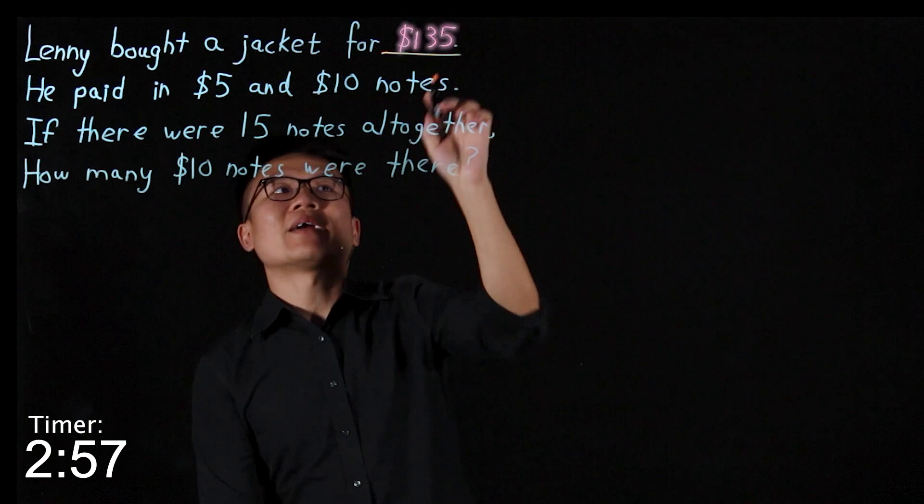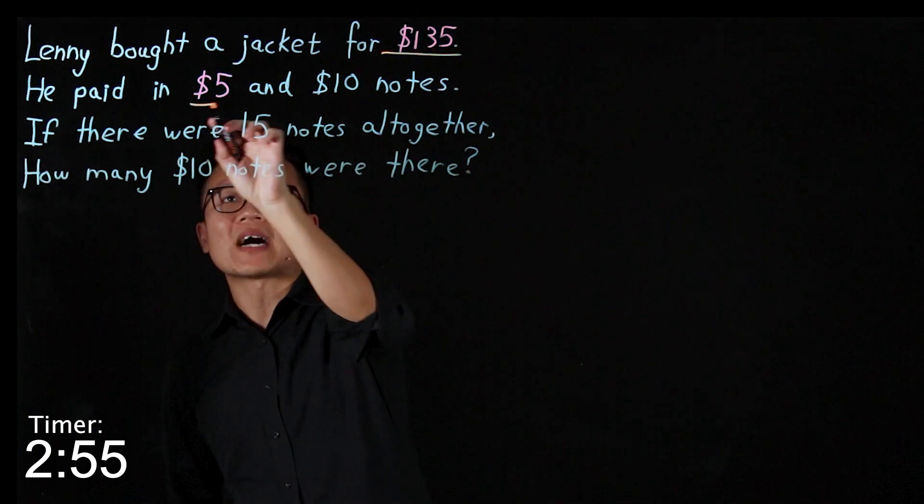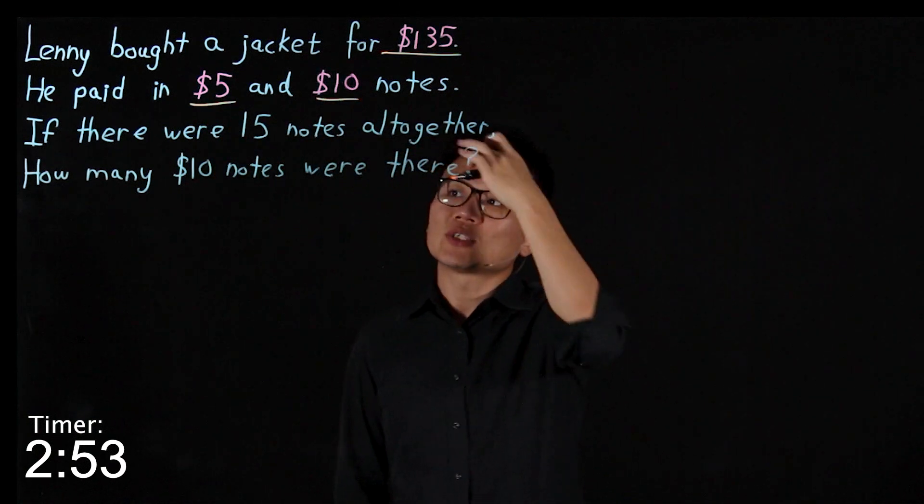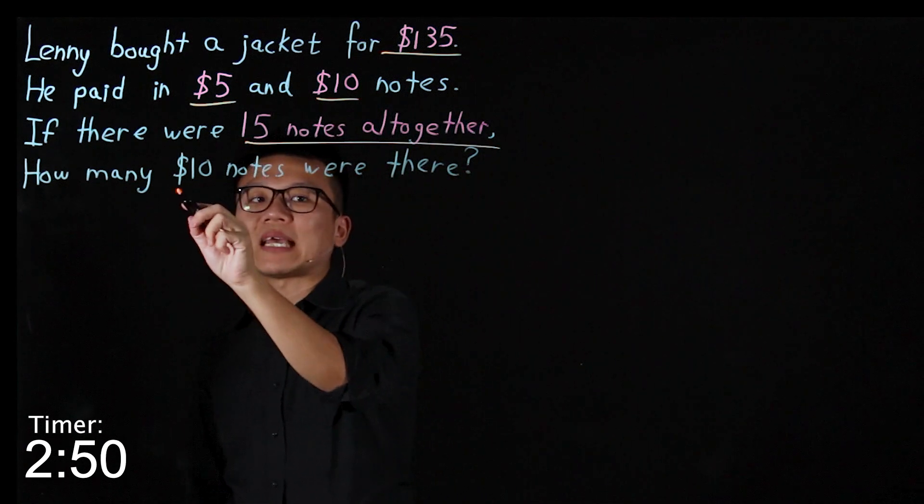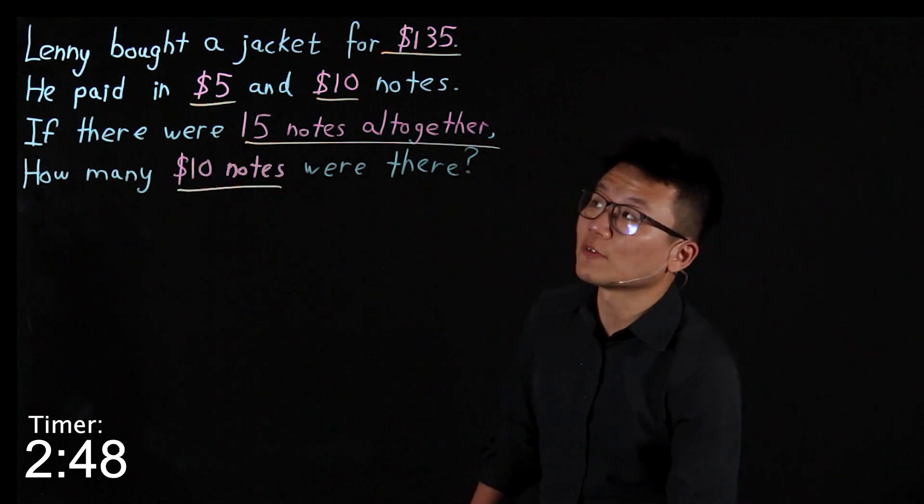Lenny bought a jacket for $135. He paid in $5 and $10 notes. If there were 15 notes altogether, how many $10 notes were there?